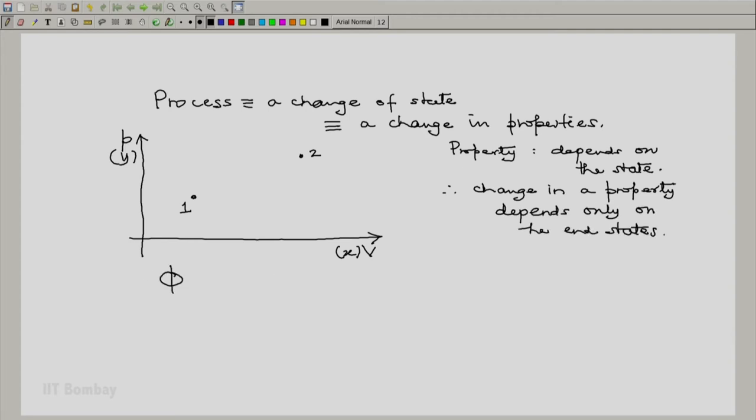Let us take an illustration. Let us take phi as a property of our system. So, as the process is executed from 1 to 2, the change in property will be the final value of the property minus the initial value of the property.